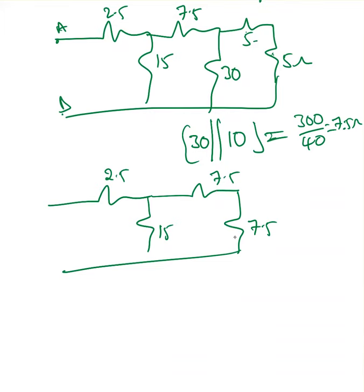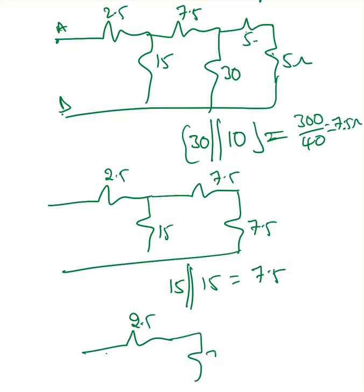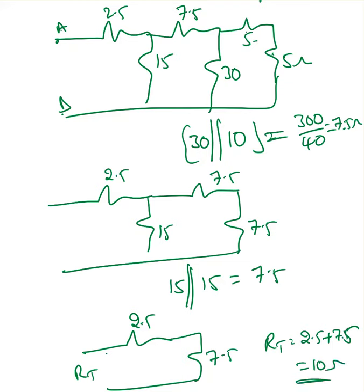These two 7.5-ohm values are in series: 7.5 plus 7.5, which is then in parallel with 15. So 15 parallel with 15 equals 7.5 ohms. Now I have 2.5 and 7.5. The total resistance R_total equals 2.5 plus 7.5, which is 10 ohms.